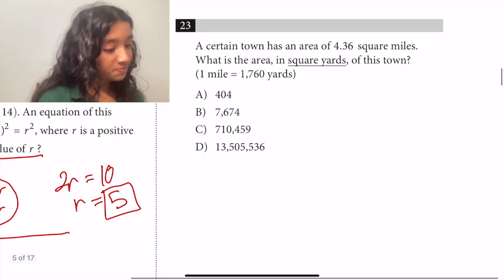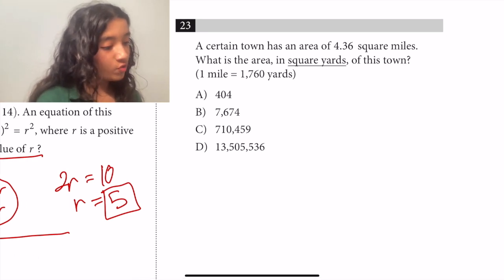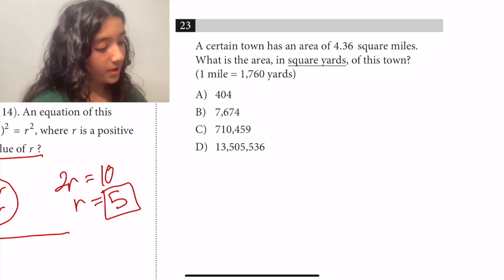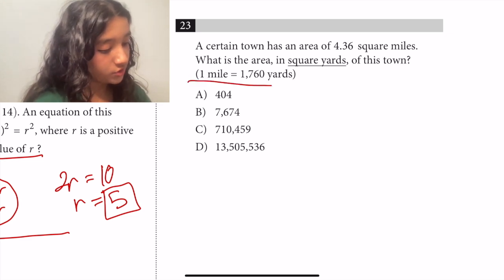Moving on to question 23. A certain town has an area of 4.36 square miles. What is the area in square yards of this town? So if we think about it, we know that we're given the conversion here: one mile is equal to 1,760 yards.